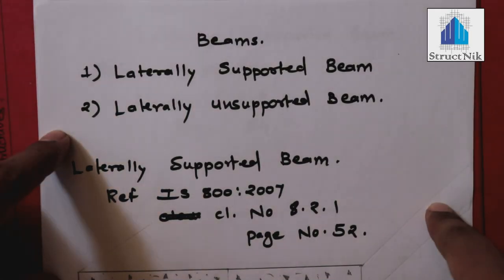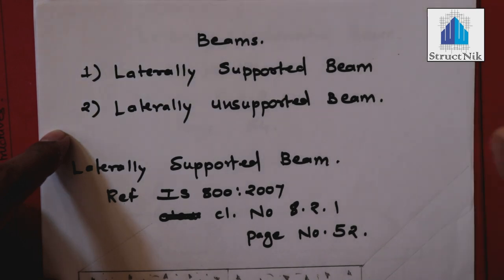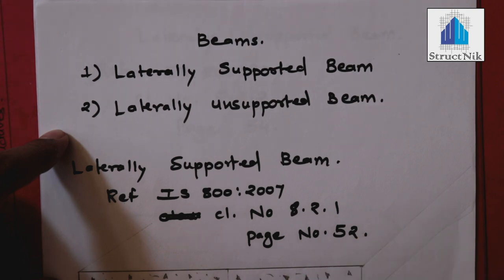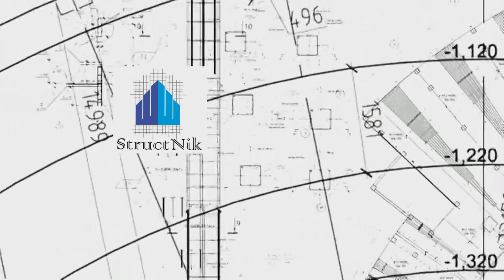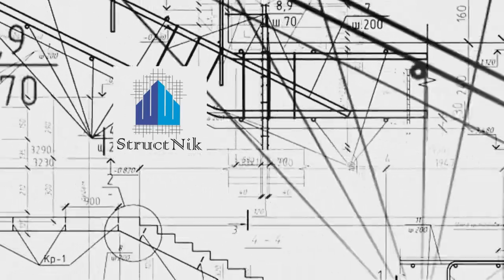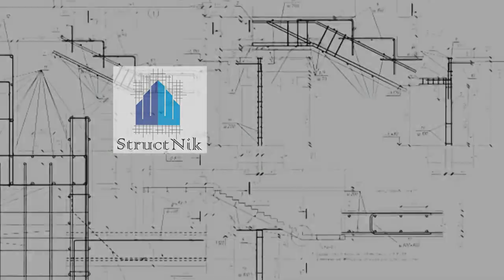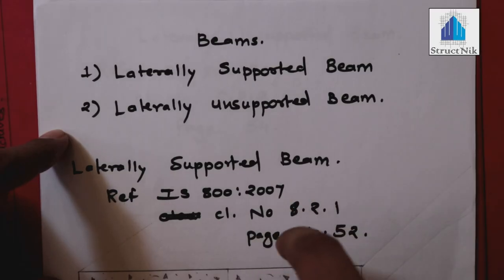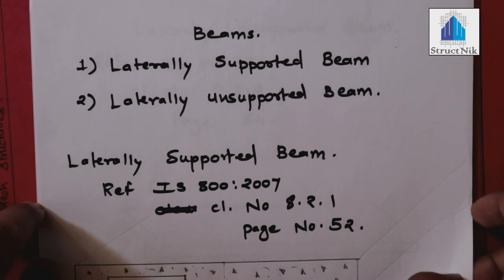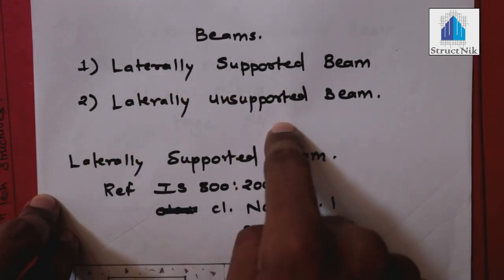When you design a beam, the most important thing to remember in steel structures is what type of beam you are dealing with. The first type you can consider is laterally supported, and the second one is laterally unsupported. In today's lecture, we are going to see what these laterally supported and unsupported beams are. Basically, in the design of steel structures, we have these two types of beams.